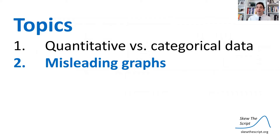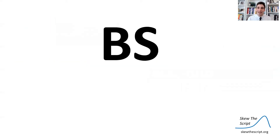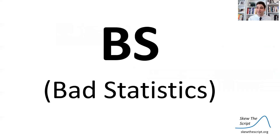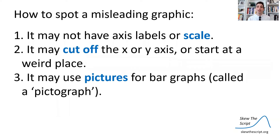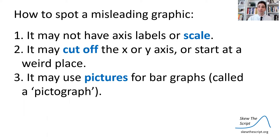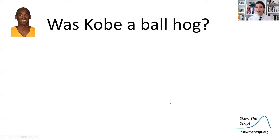Now we're going to talk about misleading graphics. A lot of statistics is looking out for BS — and we all know what BS means: bad statistics, of course. Here's a few tips: look for axes without labels or a scale; look for graphs that cut off the axes in a weird place; and look for when pictures are used instead of bar graphs, because that's often misleading.